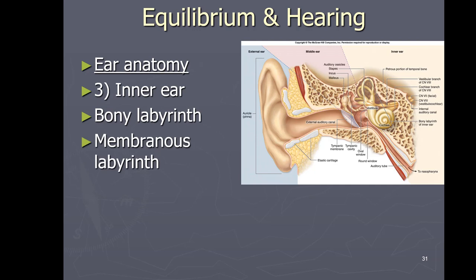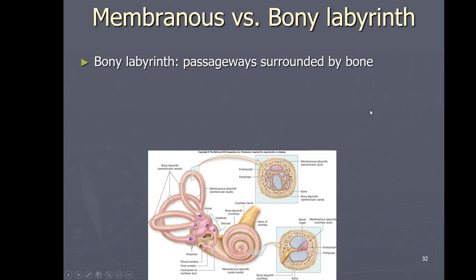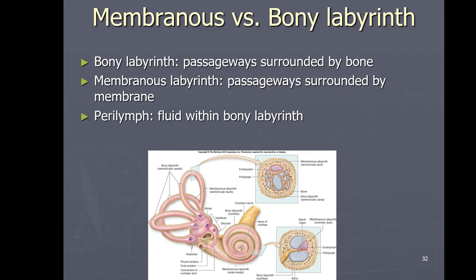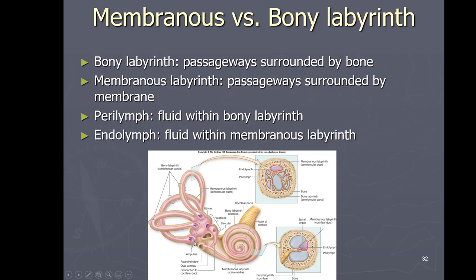The inner ear has a lot going on. It consists of a structure generally called the bony labyrinth, and inside it you have the membranous labyrinth — it looks like a big maze. There's the cochlea, which looks like a snail and is used in hearing; the semicircular canals, used in equilibrium; and the vestibule in between, also used in equilibrium.